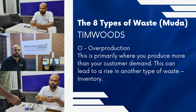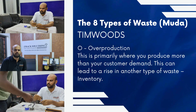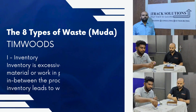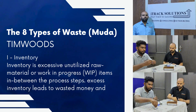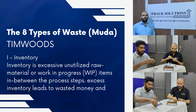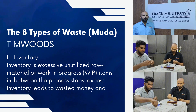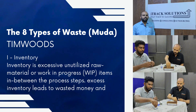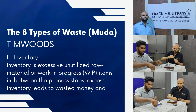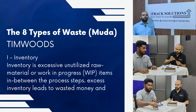Dear viewers, in this video of the Muda waste elimination series we will understand about inventory. Inventory is unutilized raw material or excessive WIP items between processing steps. In the video below, the cycle time for Processor A is relatively less and the cycle time for Processor B is more, which leads to high inventory and high WIP items between the two process steps.